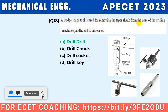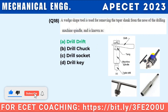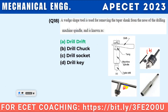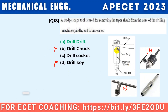A wedge-shaped tool used for removing the taper shank from the nose of the drilling machine spindle is known as a drill drift.